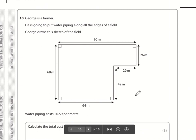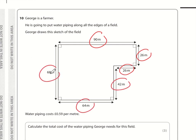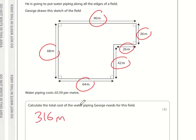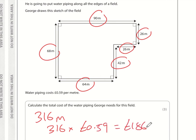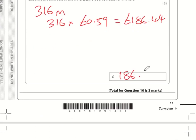Question ten: add all the side values to get the perimeter of the field, which totals 316 metres. Water piping costs 59p per metre, so the cost is 316 times £0.59, which comes to £186.44. Straightforward calculation with no catches.